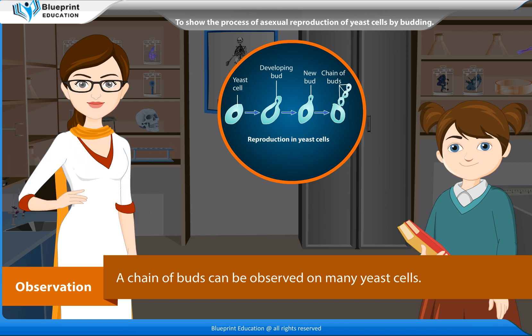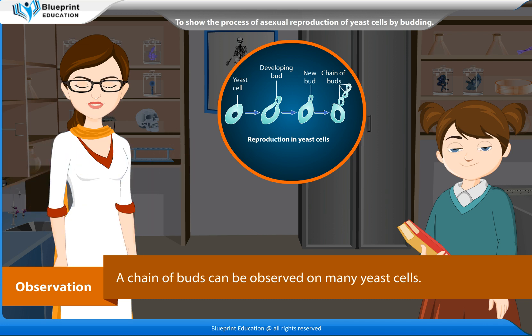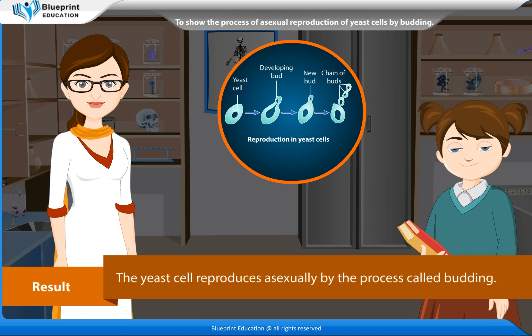Observations: A chain of buds can be observed on many yeast cells. Result: The yeast cell reproduces asexually by the process called budding.